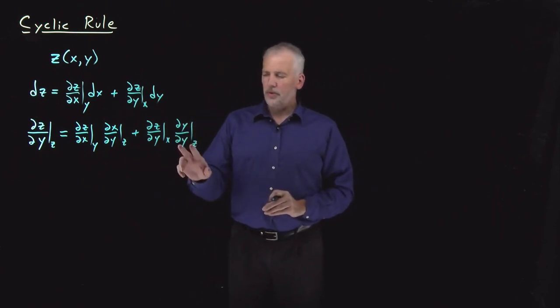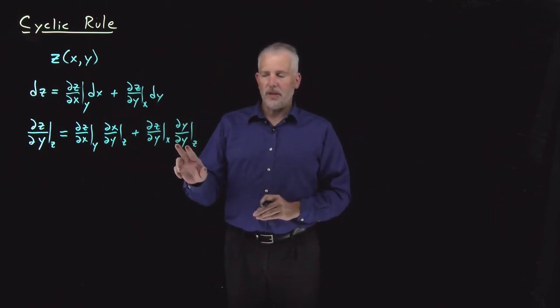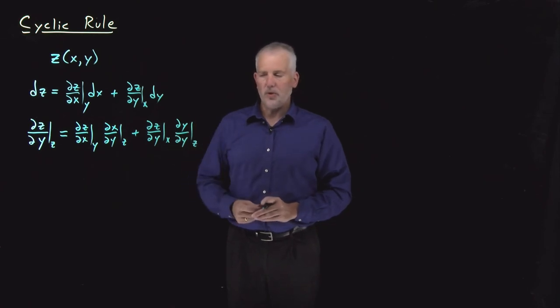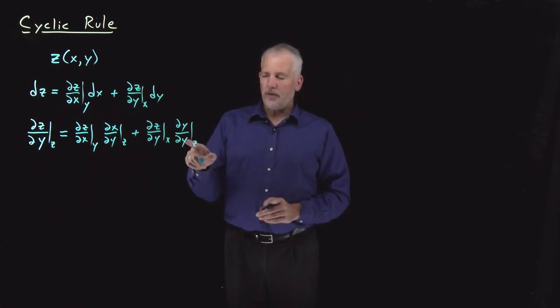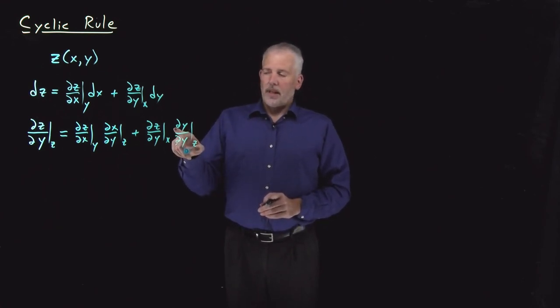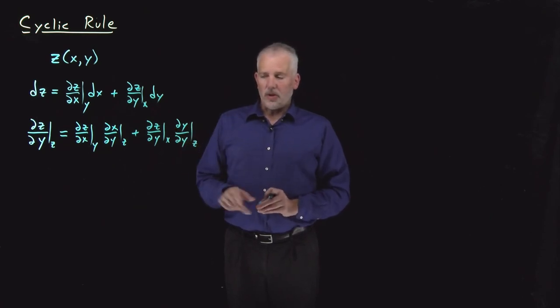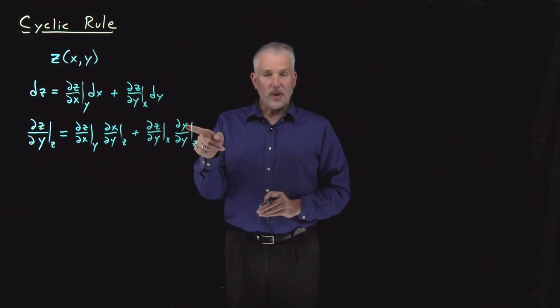So some of those new derivatives that I just wrote down may have caught your ear as being a little bit unusual. ∂y/∂y at constant z doesn't look like a derivative you're used to seeing. But if we think about what that derivative means, the rate of change of y with respect to y while holding z constant. In other words, when I change y, how much does y change?